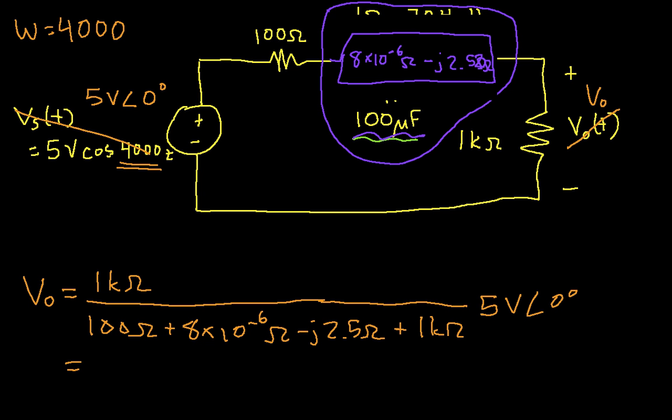So I go back to here and I basically see V out is 4.55 at an angle of 0.13 degrees. Okay, so the last step is to rewrite this as a time function. We have that V out of t is 4.55 volts cosine 4000t plus 0.13 degrees. Okay, so you can see at this higher frequency, the network whose equivalent impedance is in purple doesn't really change things much. Basically, the output voltage is mostly due to the 100 ohm resistor and the 1k ohm resistor. Okay, so that was fun.